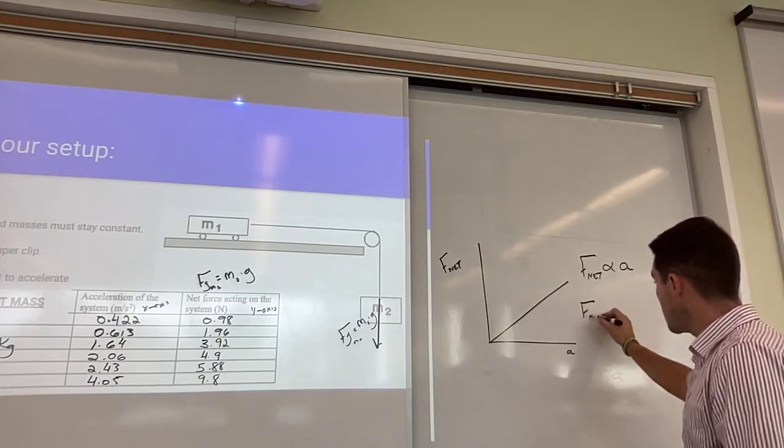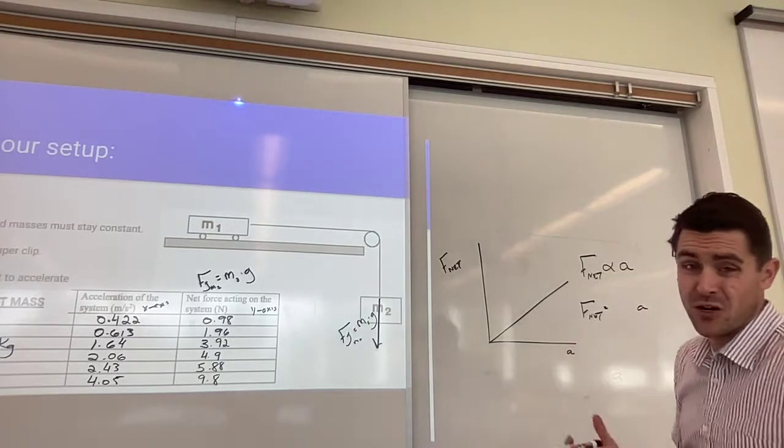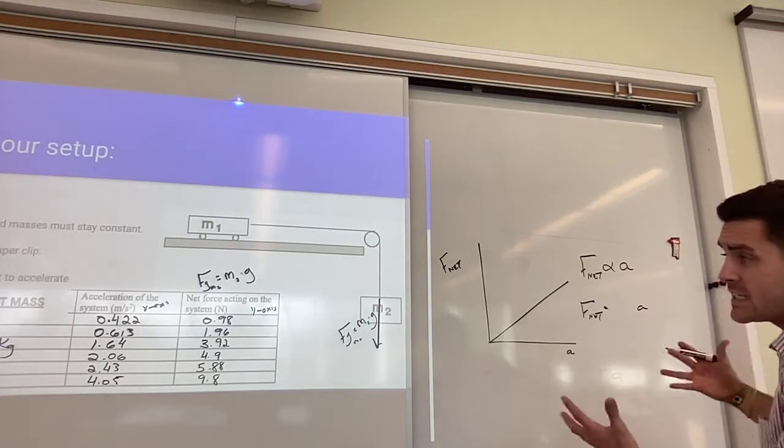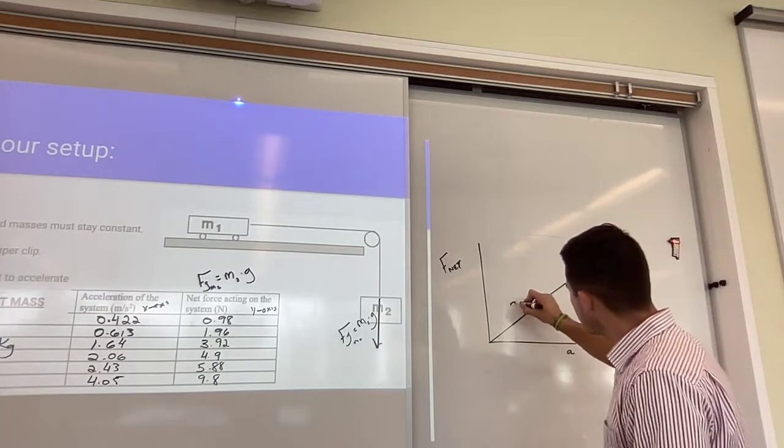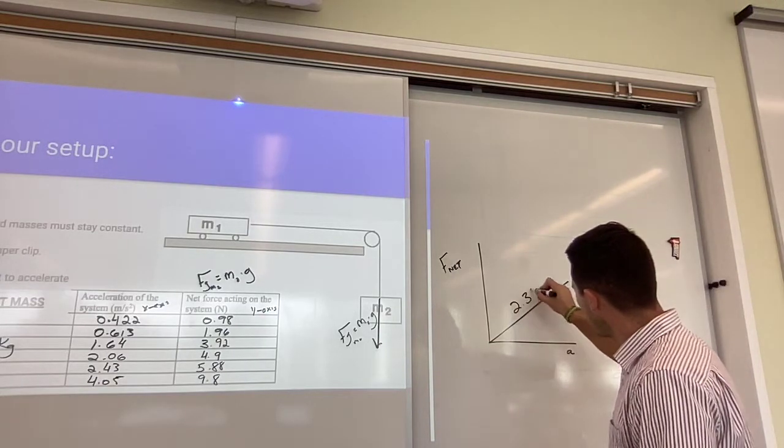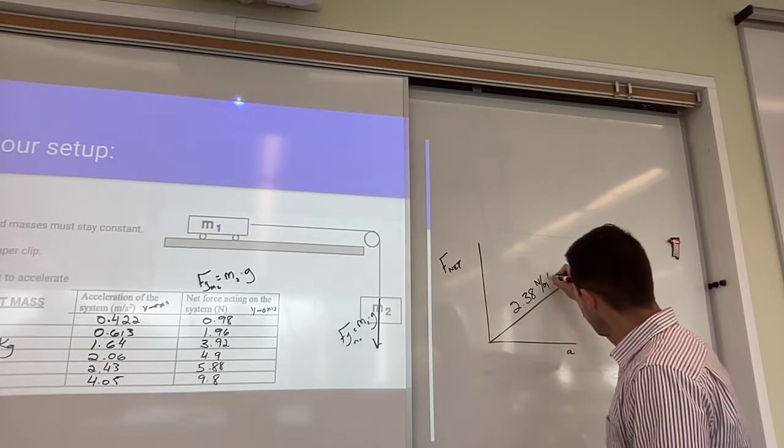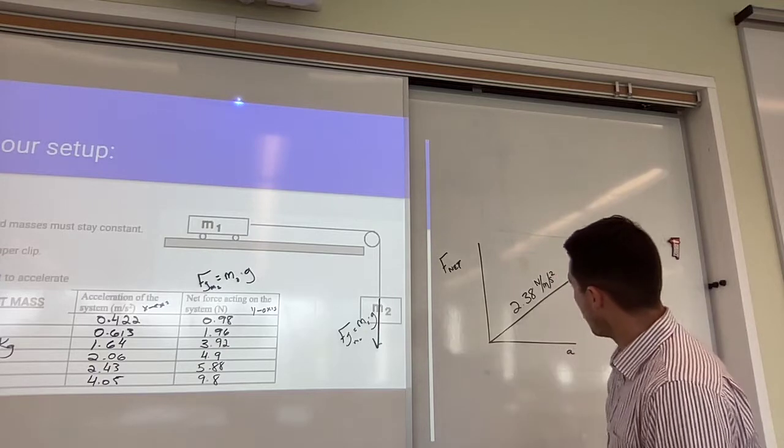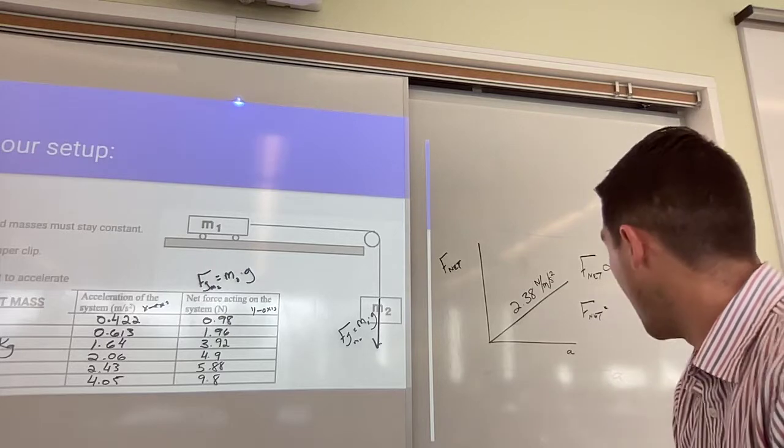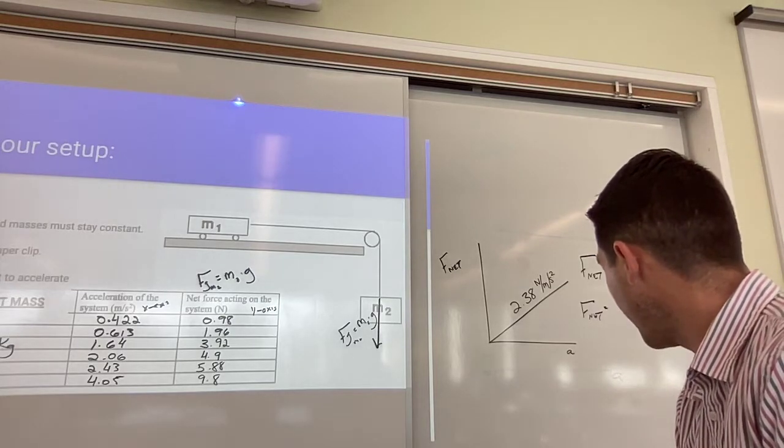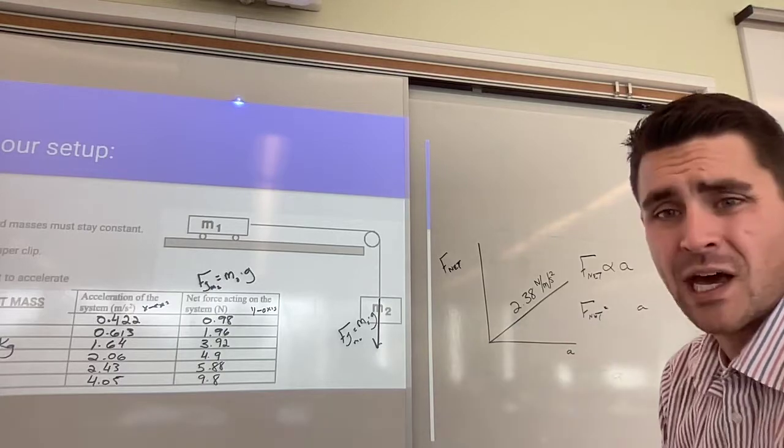This leads us to then generating a linear equation where F net equals the slope times A. I need to figure out what the slope is, but this is the equation I'm going to generate. It's something like this. I look at my slope value, and my slope value comes out to be 2.38, and in this case, it's newtons per meters per second squared, which is a really, really weird slope.